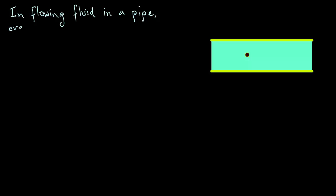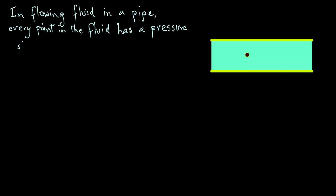In the case of a flowing fluid in a pipe, as seen in the diagram, every point in the fluid has a certain pressure associated with it. As we said, the terms pressure and static pressure are the same. Why do we call it static pressure? If we had a pressure sensor at a certain location moving with the fluid at the same velocity, then the fluid would appear stationary to that sensor, and the pressure measured would be the static pressure — that is where the term static comes from.